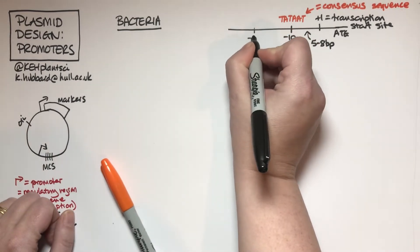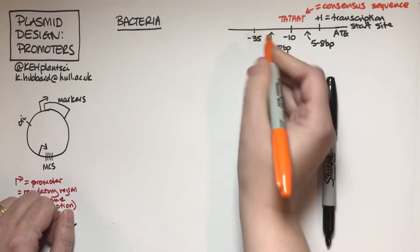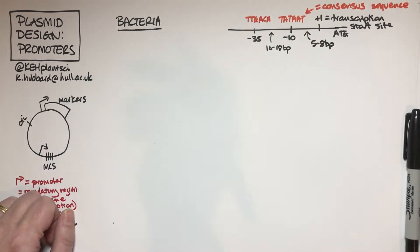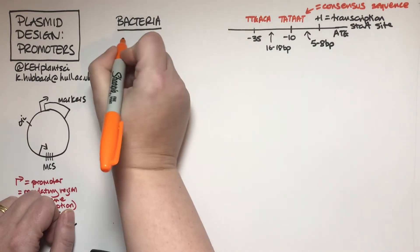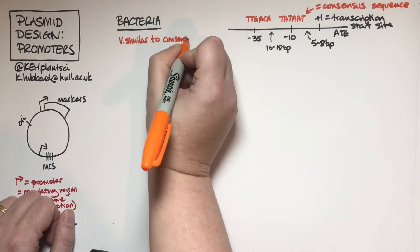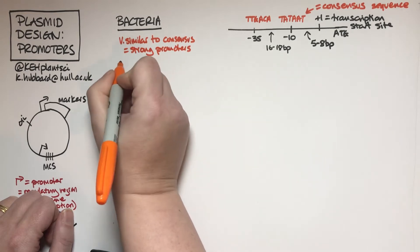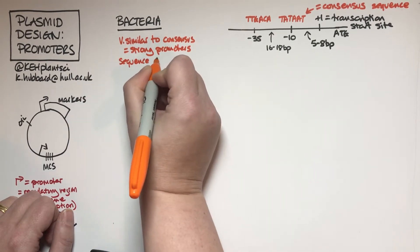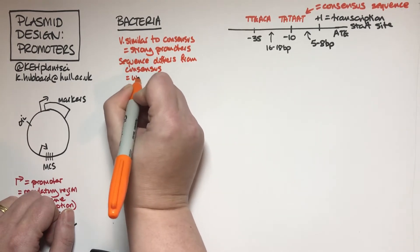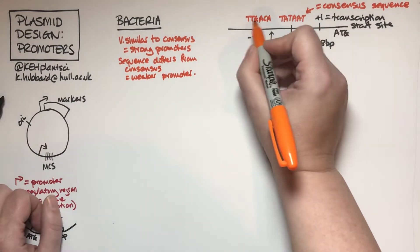At the minus 10 site we expect to see T-A-T-A-A-T. There's another element a little further upstream at what we call the minus 35 site, with 16 to 18 base pairs in between, and that minus 35 site has a consensus sequence of T-T-G-A-C-A. If you are very similar to the consensus sequence, you are a strong promoter and likely to have high levels of expression. The more the sequence differs from the consensus, the weaker the promoter.